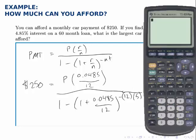But now we have to simplify everything on the right side and solve for P. I'm going to simplify the entire denominator first, starting inside the parentheses with 1 plus 0.0485 divided by 12.